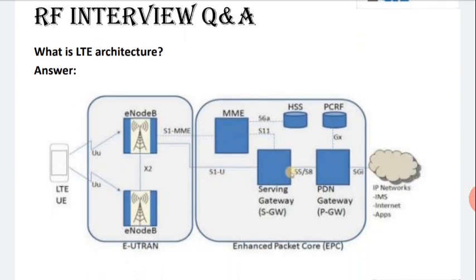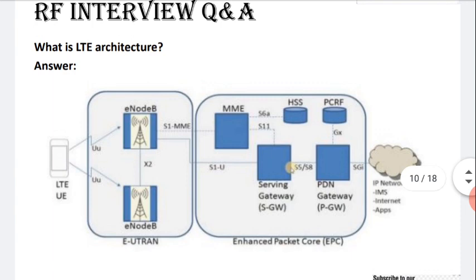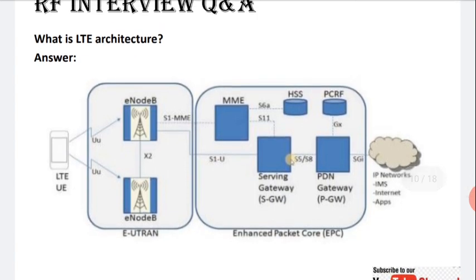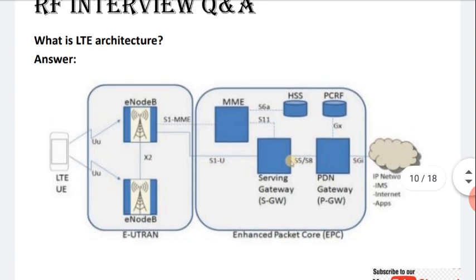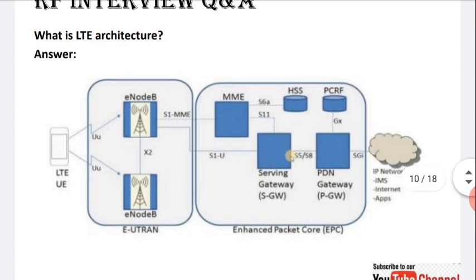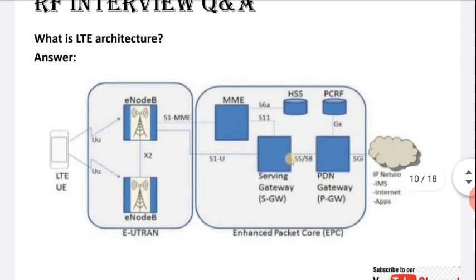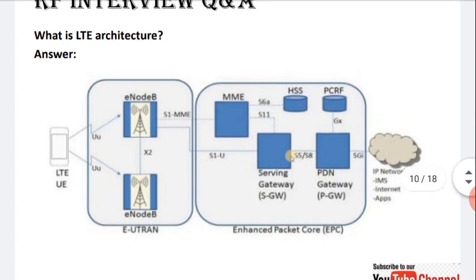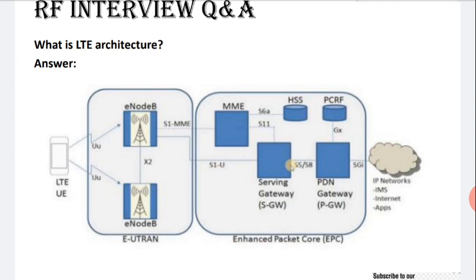What is LTE architecture? In the picture you can see: one mobile device (UE) connects via Uu interface to eNodeB. eNodeB to eNodeB connection uses X2 interface. eNodeB to MME connectivity uses S1-MME interface, and S1-U interface connects to the Serving Gateway. Remaining interfaces include S6a to HSS, S11 to Serving Gateway, S5 and S8 to PDN Gateway, SGi to IP Multimedia Services, and Gx to PCRF.